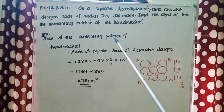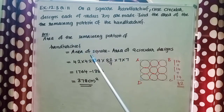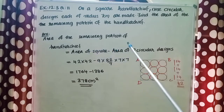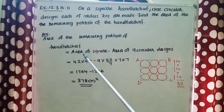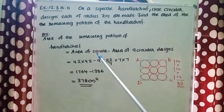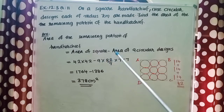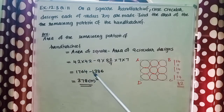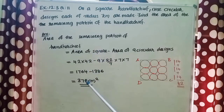Area of the remaining portion of the handkerchief equals area of square minus area of nine circular designs. That is equal to 42 into 42 minus 9 into 22 by 7 into 7 into 7. That equals 1764 minus 1386. That equals 378 cm².